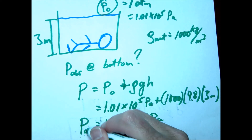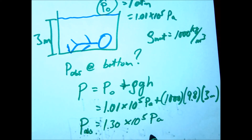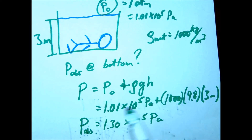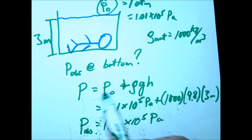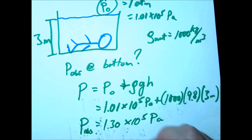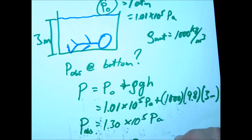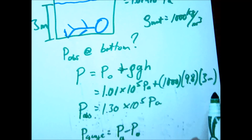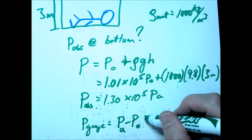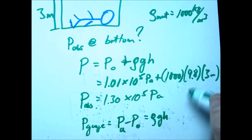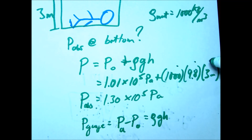That 1.3 times 10 to the fifth Pascals is our absolute pressure at the bottom. The gauge pressure would be the absolute pressure minus P-naught, which simply leaves us with ρgh. When you calculate that out, you get about 29,000 Pascals.